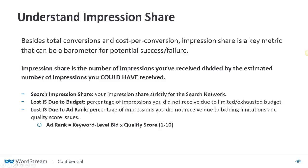Some key jargon: search impression share is strictly your impression share for the search network. You can lose impression share because of your budget — if you have $10 per day and spend it all by noon, you simply won't serve your ad for the rest of the day. You can also lose impression share because of your ad rank, which relates to bidding and the quality score applied to a keyword. The ad rank equation is keyword-level bid multiplied by quality score — always a number from 1 to 10. You could be losing impressions because you're not meeting market average bids, or because your quality score is poor.